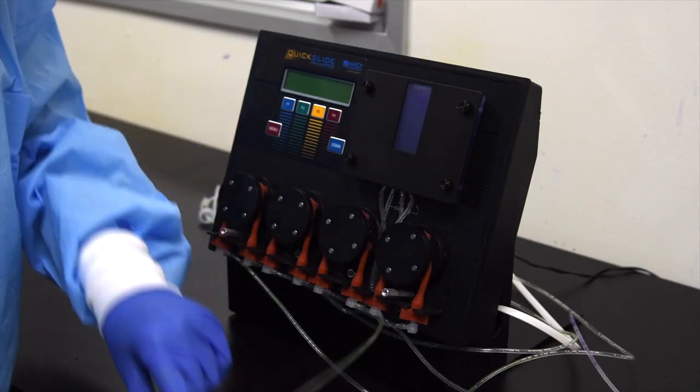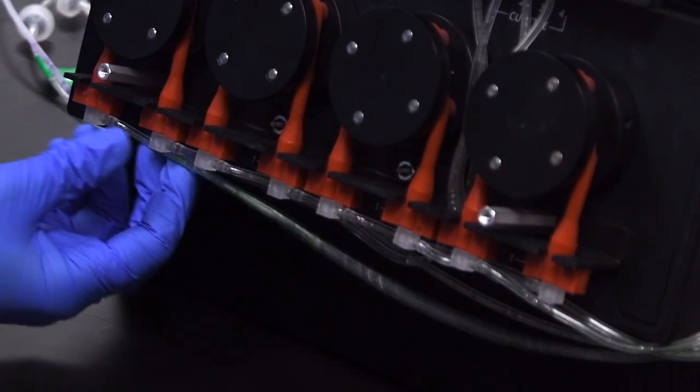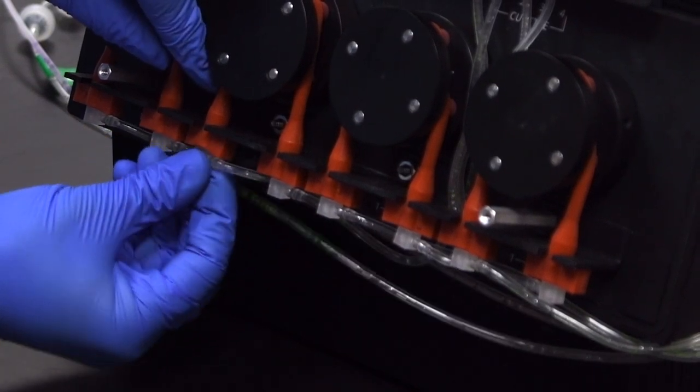Take the long end of the clear cannula tube and wrap it around the right side of the machine. Make sure the cannula elbows are tightly connected to the orange pump tubes.